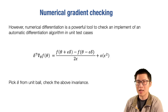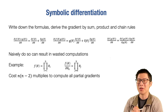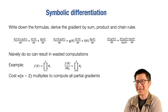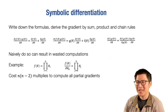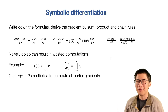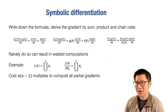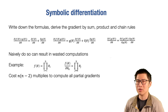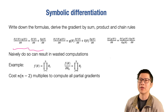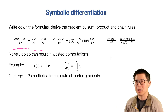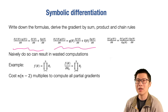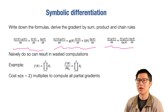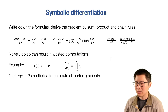Let's move on to the second way to compute a gradient — the typical way before automatic differentiation became popular. We can do it by hand: write down the formula of the function f and symbolically derive what the gradient function looks like. To do that, we apply several gradient derivation rules, including the addition rule, the multiplication rule, and the chain rule for composed functions.